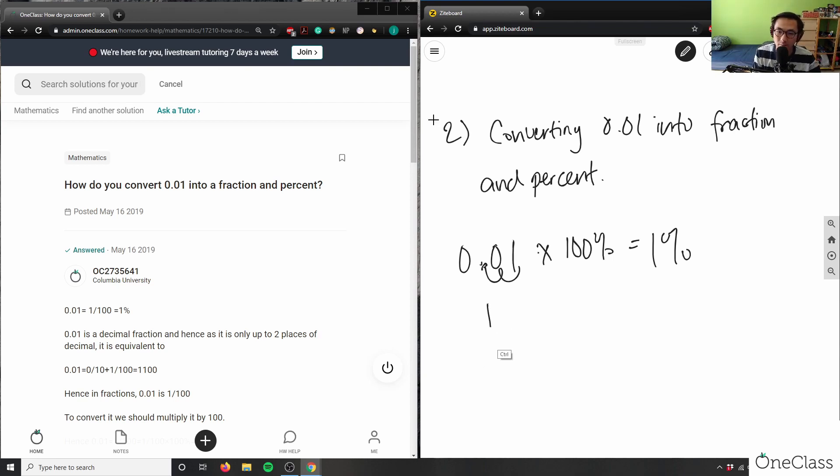And obviously if I want to convert percentage back into a fraction, I would simply have to do 1 percent divided by 100 percent here to get me a fraction. So I'd simply have 1 over 100. So these two are my correct answers.